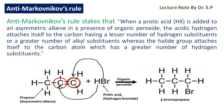To illustrate this rule, we can take an example of propene, which is an asymmetric alkene. When we add a protic acid like hydrogen bromide to propene in the presence of organic peroxide, the hydrogen atom of hydrogen bromide is attached to the carbon atom having alkyl substituents or having lesser hydrogen atoms, and bromine attaches to the carbon atom which has a greater number of hydrogen atoms, as shown in the reaction.